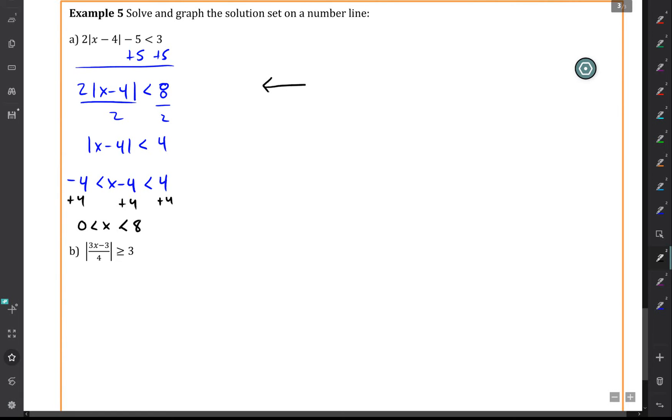So when I graph this on a number line, we'll have 0, here's 8, so that's 4, here's negative 4, here's negative 8. The solution set is going to be a set of all points x, such that x is greater than 0 and less than 8.